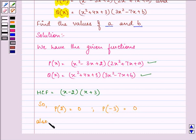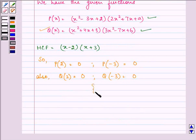Also, Q(2) = 0 and Q(-3) = 0. That is, we have obtained all these things by using factor theorem.